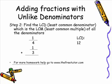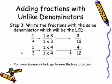Once you've found your LCD, you're ready to proceed to Step 3, which is to rewrite the fractions with the same denominator. The denominator will be the least common denominator as described in the previous step. As you can see, we have changed 1 fourth to become 3 twelfths by multiplying the numerator and denominator by 3. And we've changed 1 third to become 4 twelfths by multiplying the numerator and denominator by 4. So instead of 1 fourth plus 1 third, now we have 3 twelfths plus 4 twelfths, and our challenge has been solved in that the denominators are now the same.